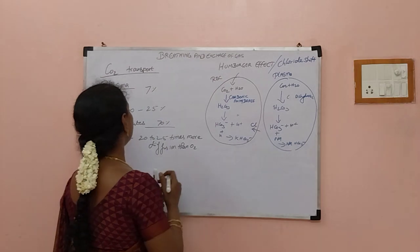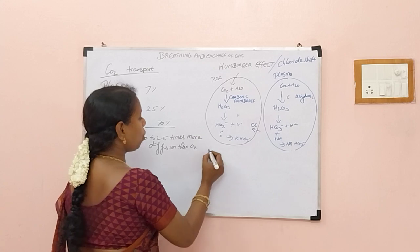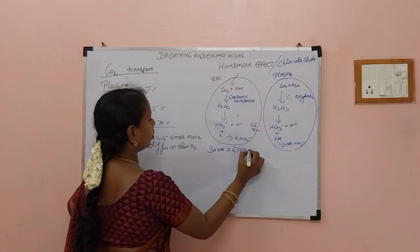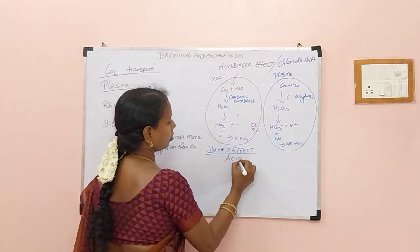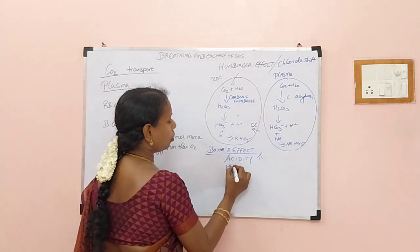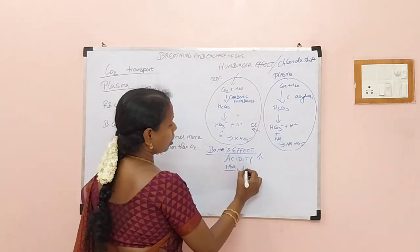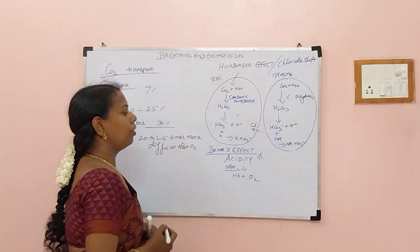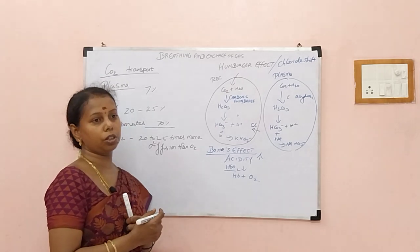This is relevant to bicarbonate formation and how 70% is formed. We should also know Bohr's effect: when acidity increases, the association between hemoglobin and oxygen is reduced, causing oxygen to dissociate from hemoglobin. That is Bohr's effect.